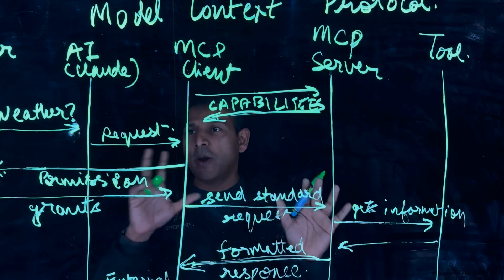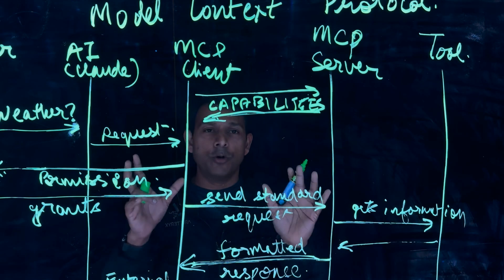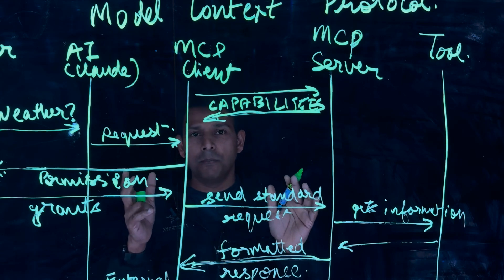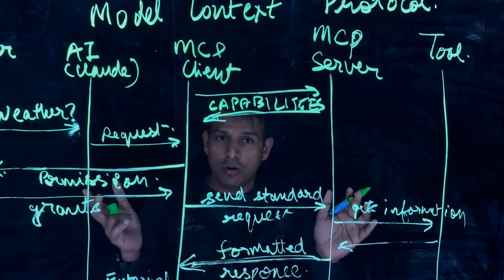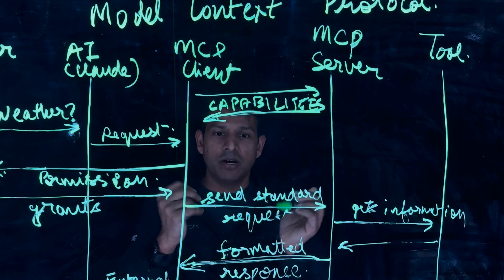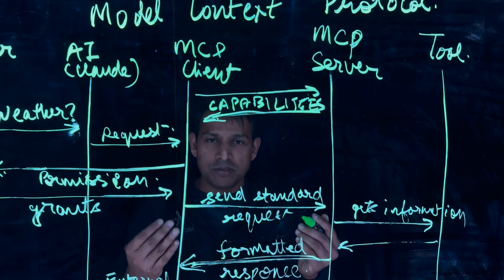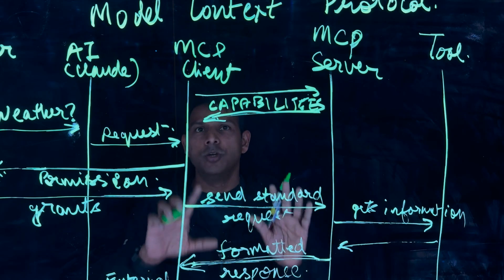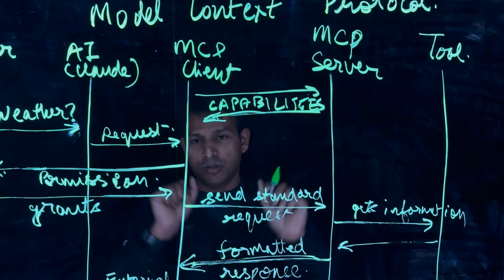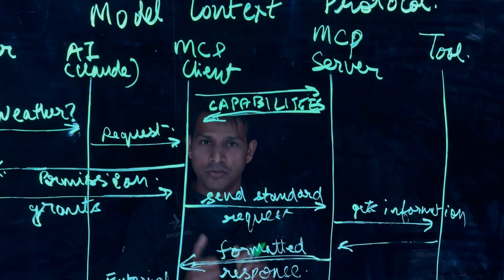So I hope that gives you a quick overview and an understanding of what is an MCP protocol, Model Context Protocol, how does an MCP client interact with an MCP server, what are the different steps in the whole process, and how you can use MCP to build agent tech systems end-to-end. Thank you.